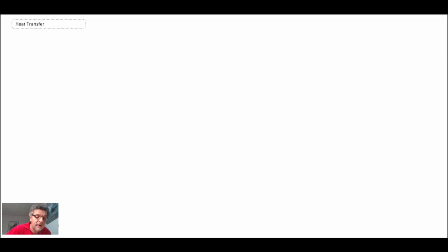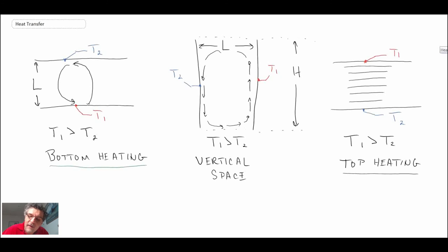When we're dealing with this, we have a Grashof number, and the Grashof number with the characteristic length is L. L in all of those cases is the separation between the two plates, expressing that as a Grashof number.